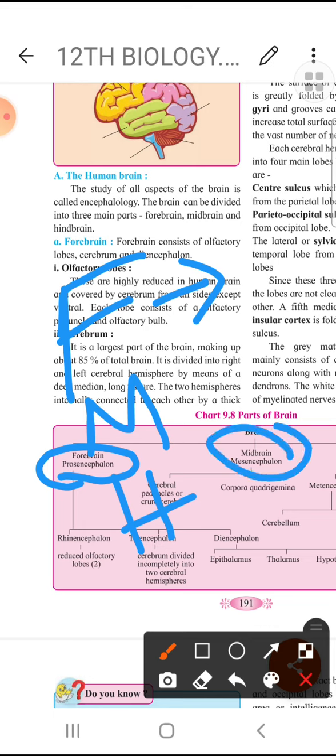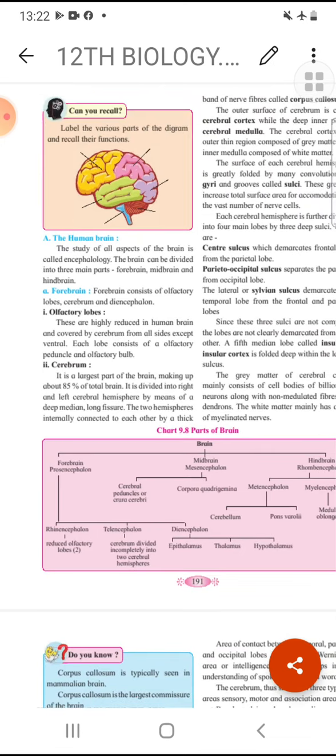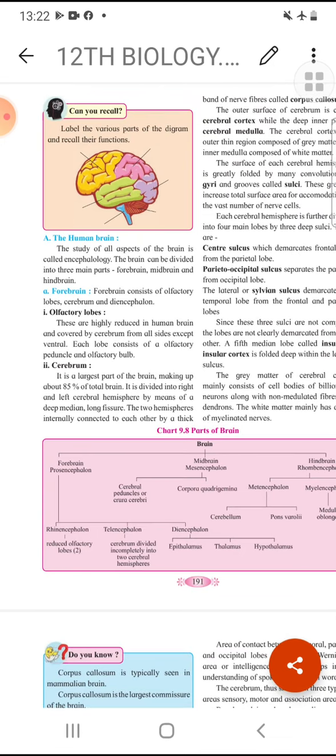You have to learn these three names: prosencephalon, mesencephalon, rhombencephalon. Encephalon means the brain. Pro means forebrain. Mes means mid. Rhomb means hind. So brain is divided into prosencephalon, mesencephalon, rhombencephalon. So we have forebrain, midbrain, hindbrain. The forebrain is divided into three.